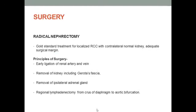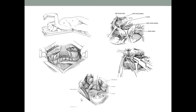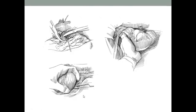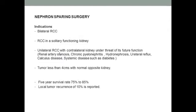Treatment: Radical nephrectomy is the gold standard for localized RCC. The principle is perifascial removal — taking out the Gerota's fascia along with the kidney, ligating vessels early, and removing the adrenal gland especially if the tumor is in the upper part. Regional lymphadenectomy from the crus of the diaphragm to the aortic bifurcation is no longer routinely indicated, but all available lymph nodes around the kidney should be taken. Nephron-sparing surgery is another option, preserving the kidney, indicated for bilateral RCC or RCC in a solitary functioning kidney.